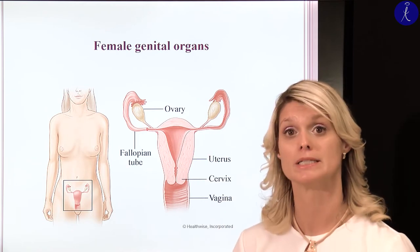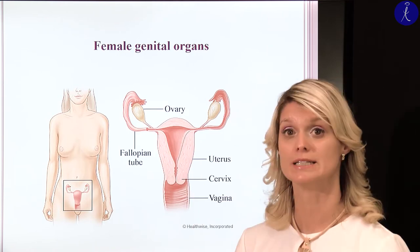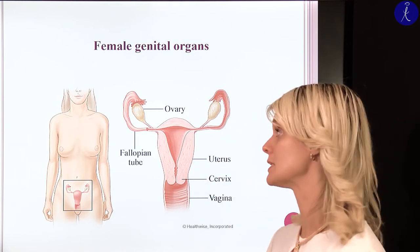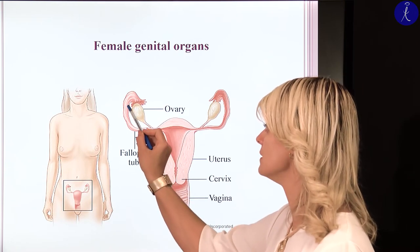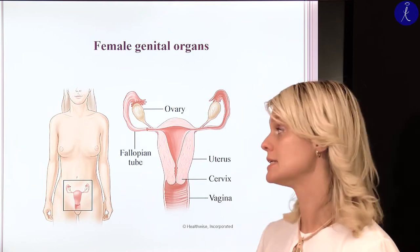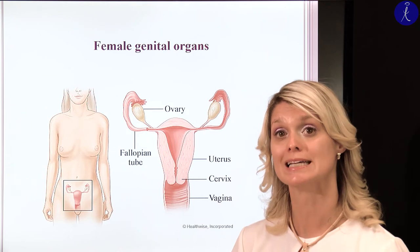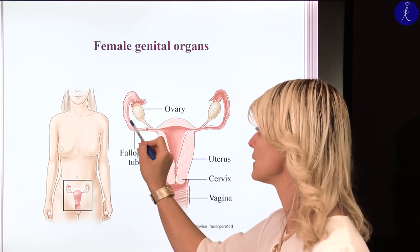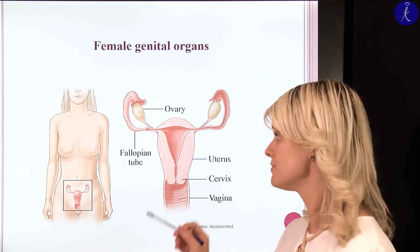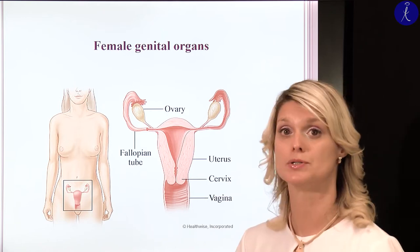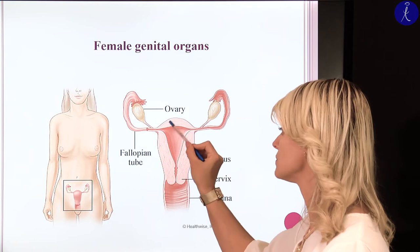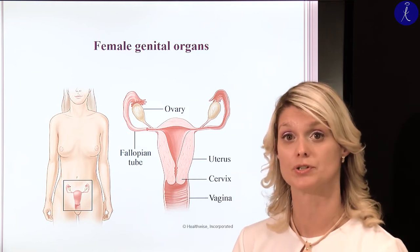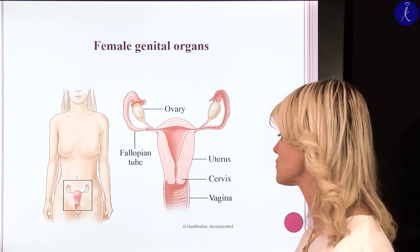Here you can see a picture about the organs. The first one is the ovary — this is a paired organ, like a small structure, with a diameter of approximately two centimeters. After that you can see this tube-shaped organ, which is the fallopian tube, and through this tube the oocyte can go towards the cavity of the uterus after ovulation. This is the uterus, which we can divide into two main parts: the body of the uterus and the lower part called the cervix. And finally, this structure is called the vagina.